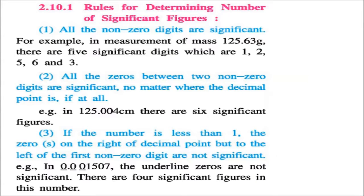There are certain rules for determining the number of significant figures. First, all non-zero digits are significant. For example, 1, 2, 3, 1, 2, 3, 4, 5 — or 1, 2, 5, 6, 3 — they are all non-zero, so all are taken. There are 5 significant figures in that case.